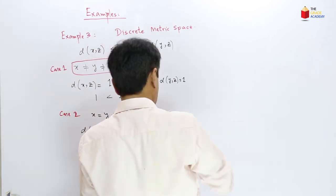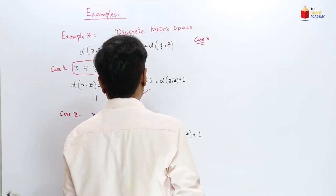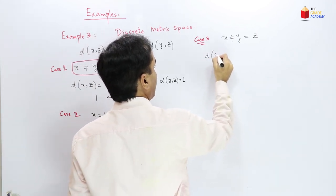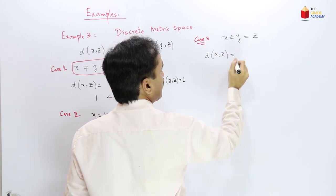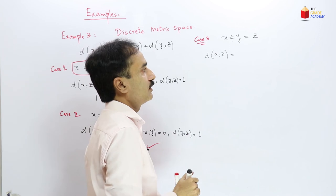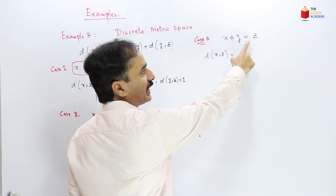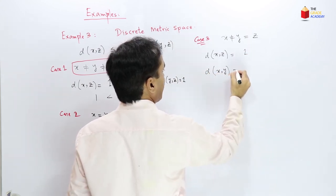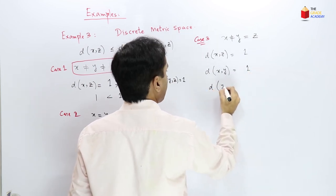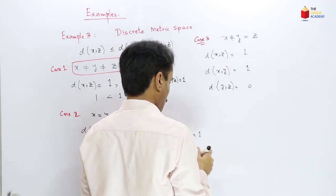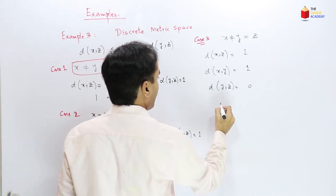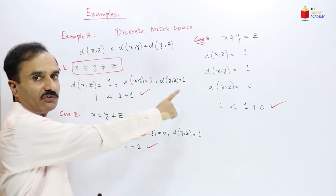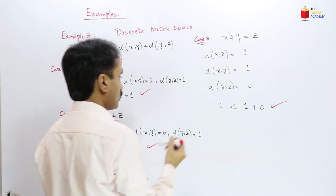Now we consider case 3: x ≠ y and y = z. Since x ≠ y and y = z, x and z are also not equal, so d(x,z) = 1. Since x ≠ y, d(x,y) = 1. Since y = z, d(y,z) = 0. So here 1 ≤ 1 + 0, which is true. For all three cases the triangular inequality is satisfied.